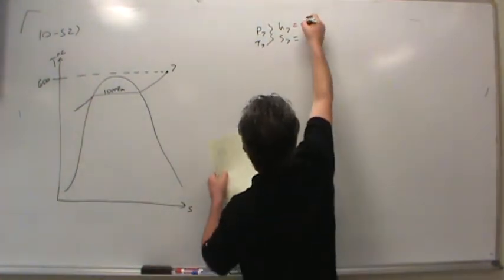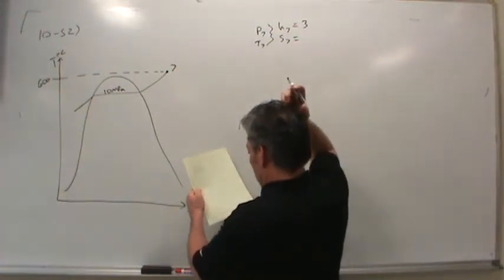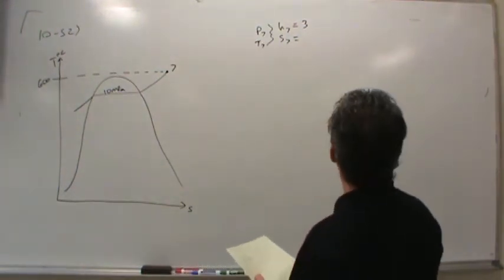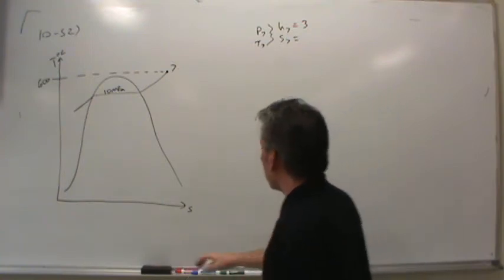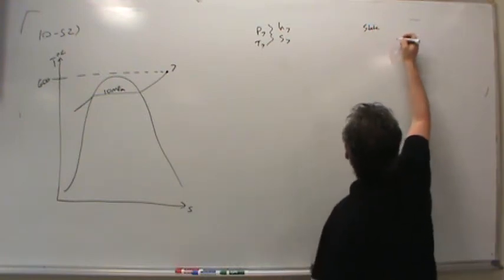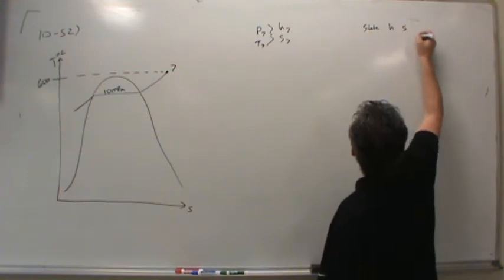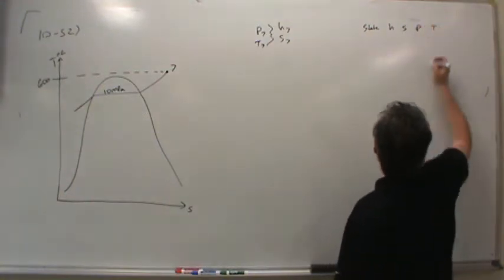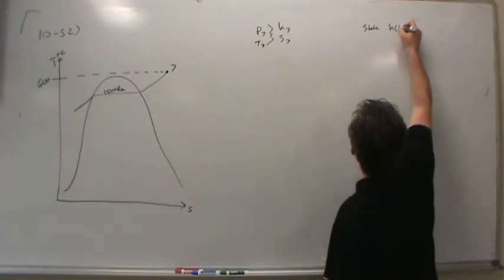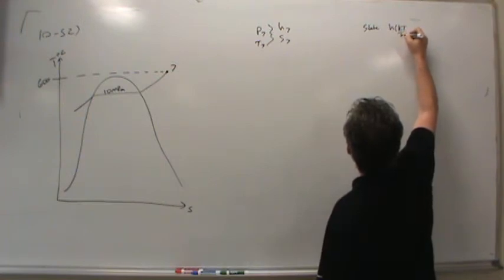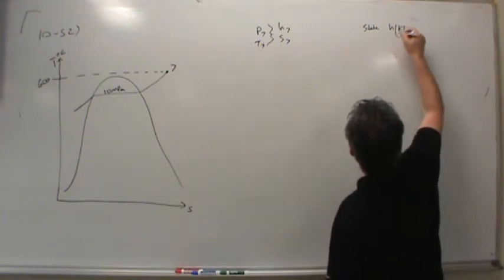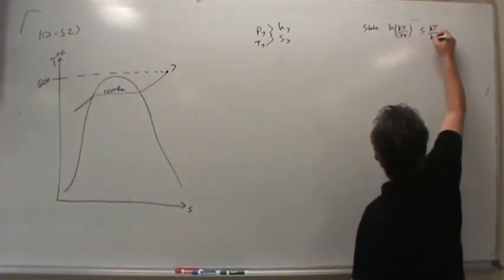If you look up the enthalpy and entropy, let's go over here and make a table of states. We'll include enthalpy in kilojoules per kilogram, entropy in kilojoules per kilogram per kelvin, temperature in degrees Celsius, and pressure in kilopascals.